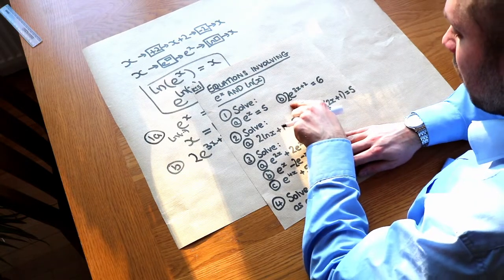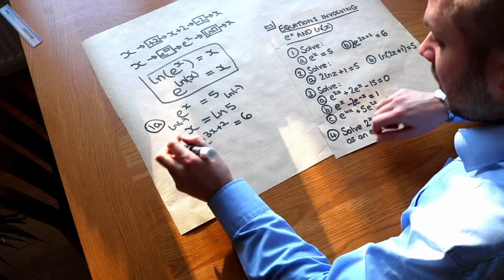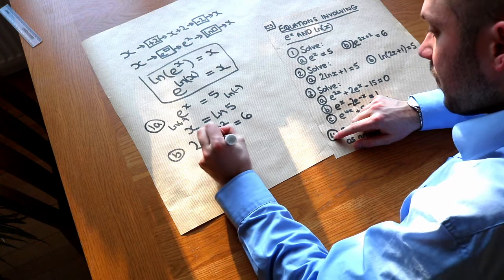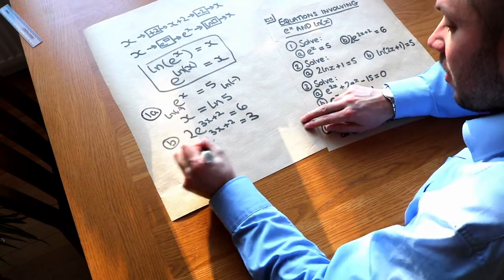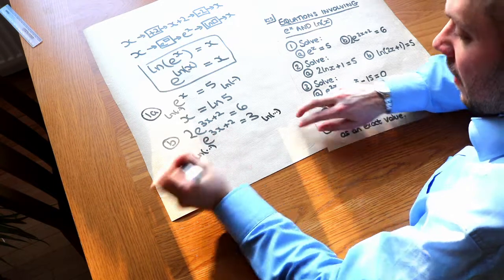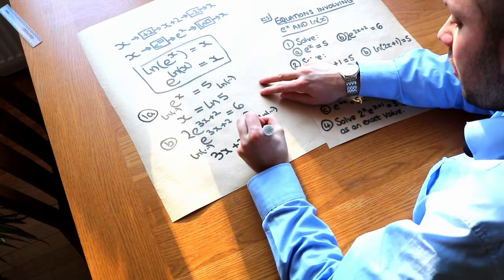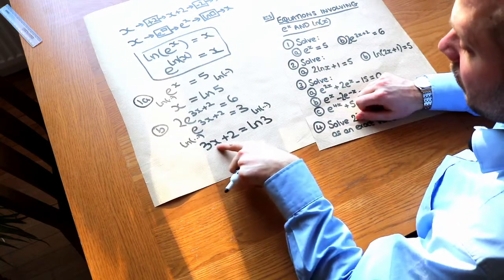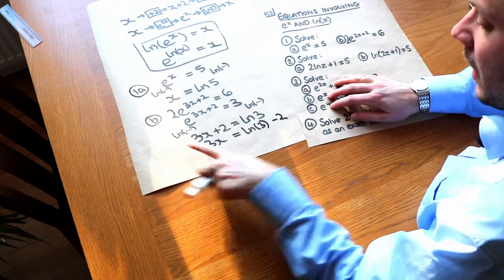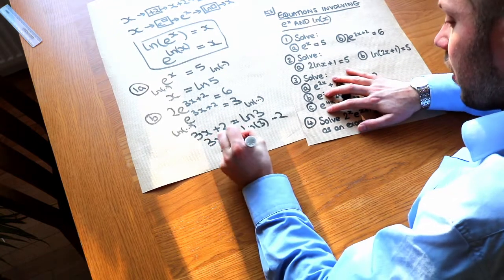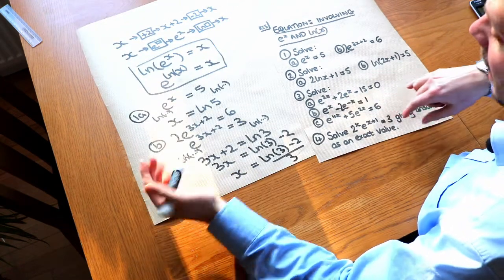For the second equation, 2e to the 3x plus 2 equals 6: first divide both sides by 2 to get e to the 3x+2 equals 3. Now ln both sides — that gets rid of the e to the power of, leaving 3x + 2, and we also have ln 3 on the right. Subtract 2 from both sides, then divide by 3 to get x = (ln 3 − 2) / 3 as the exact answer.